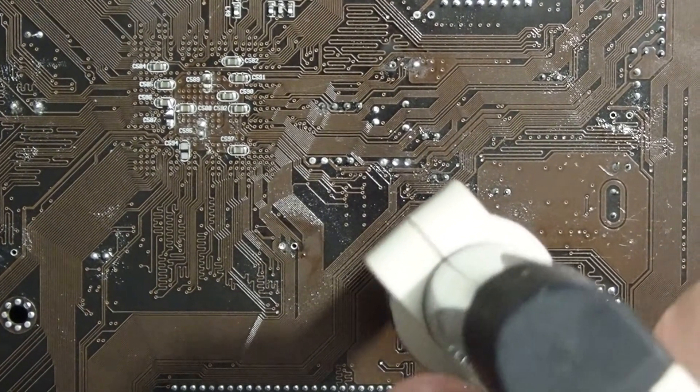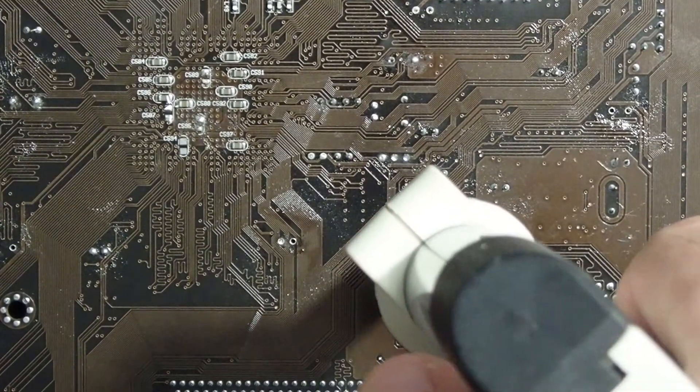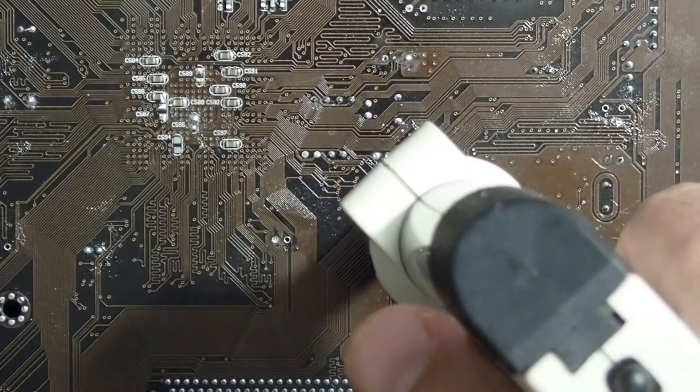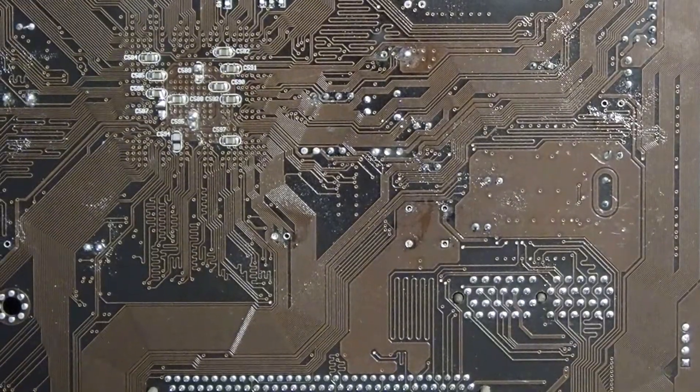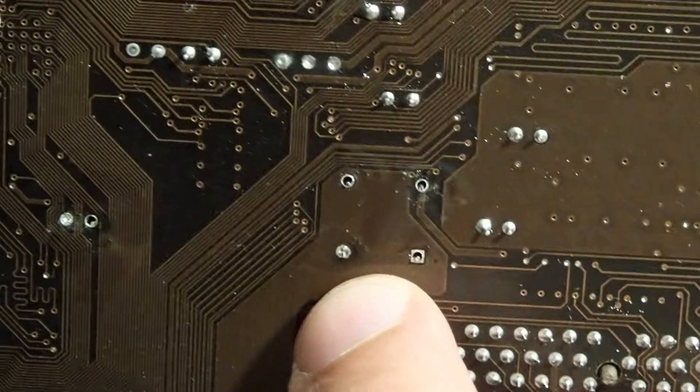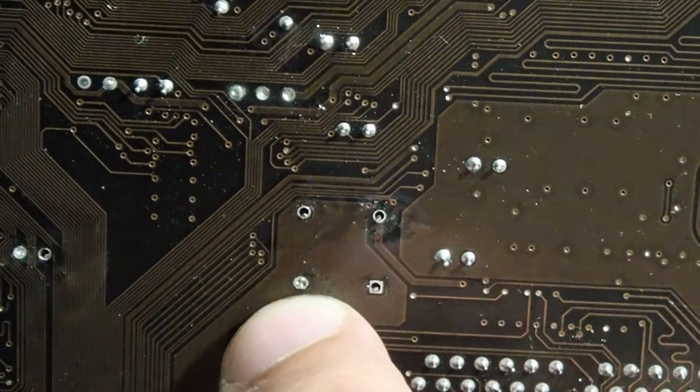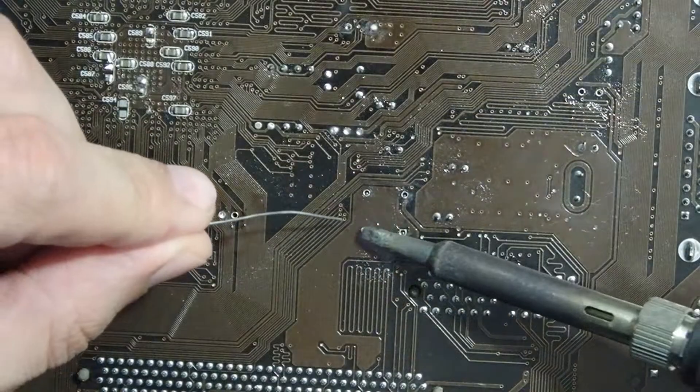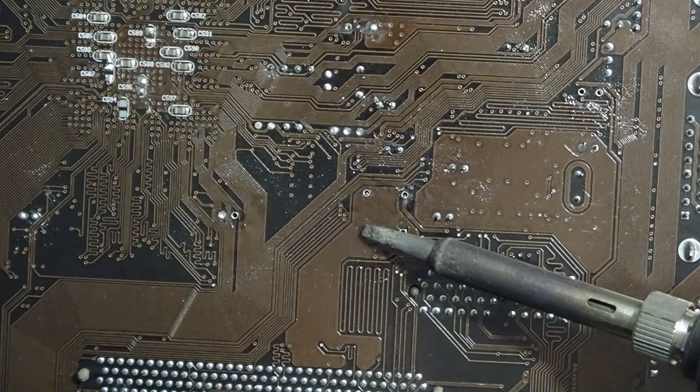And wiggling or doing such a circular movement of the desoldering gun helps a lot. So as you can see here, it looks much better. Three contacts are completely free. One is still, well, to be improved. And I will add more solder on it and try it once again.